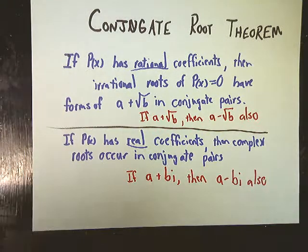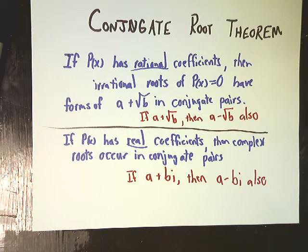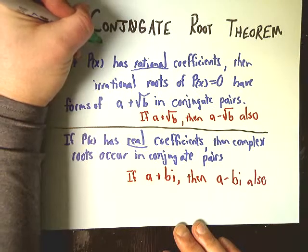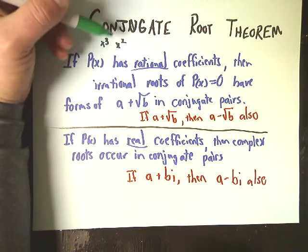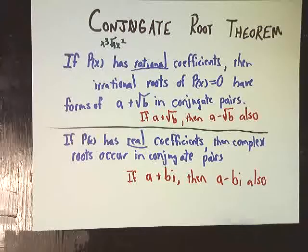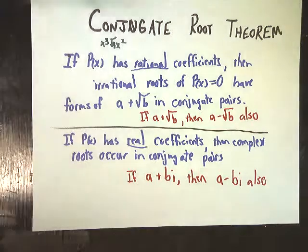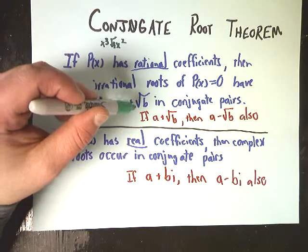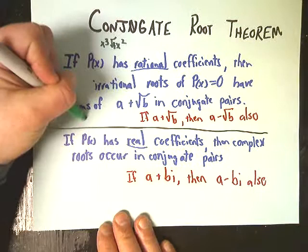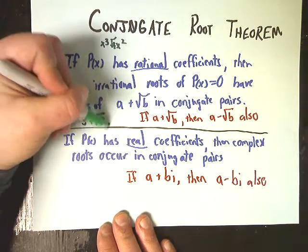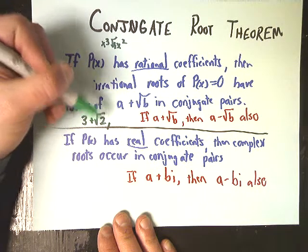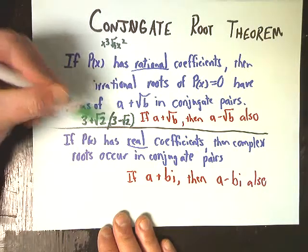The next thing is the conjugate root theorem — another math concept that makes everything seem more complicated than it really is. It says if a polynomial has rational coefficients — basically non-square-root terms in front of your x, x², etc. — then in order to cancel everything out, you need to have both the positive and negative version. So if you have something plus the square root of something, you also need something minus the square root of something. For example, if you have 3 + √2 as a root, you also need 3 - √2.